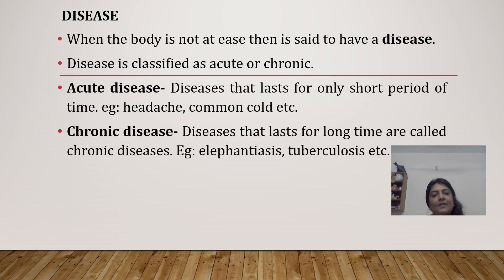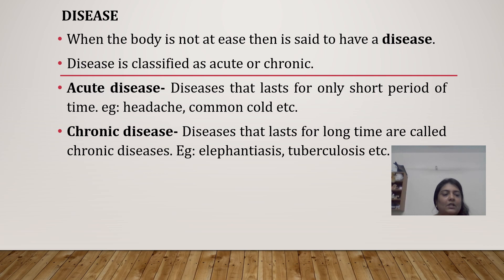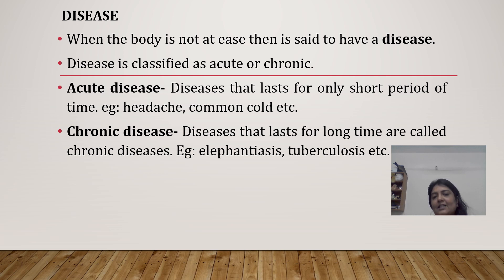Similarly, tuberculosis is a serious illness that mainly affects the lungs. The germs that cause tuberculosis are a type of bacteria, and it can be cured. The vast majority of TB cases can be cured when medicines are provided and taken properly. These two diseases last for a long time and are called chronic diseases.